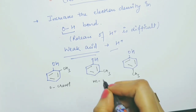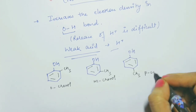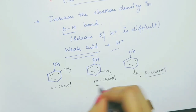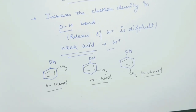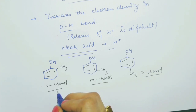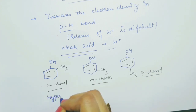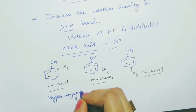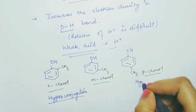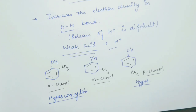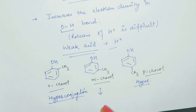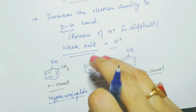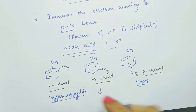If we compare the acidic strength of ortho-cresol, meta-cresol, and para-cresol: hyperconjugation will operate more in ortho and para positions. But in the meta position, hyperconjugation does not play much role. Therefore hyperconjugation will not affect the acidic strength of meta-cresol.